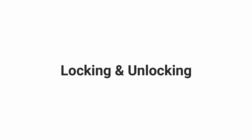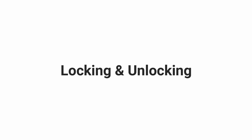Let us now understand how this locking is produced. Locking occurs as a result of medial rotation of the femur during the last stage of extension. This medial rotation of the femur is brought about by the quadriceps femoris muscle, which helps in locking of the knee joint.